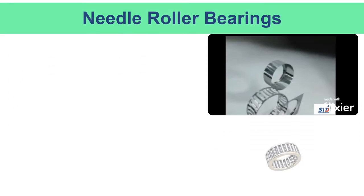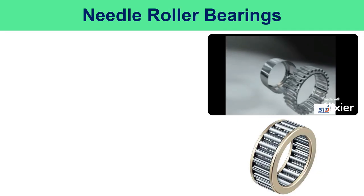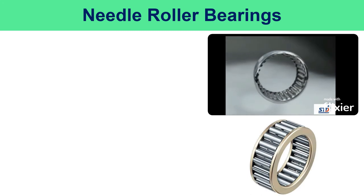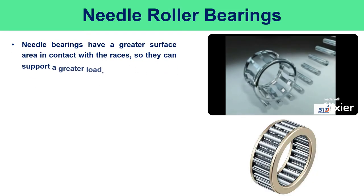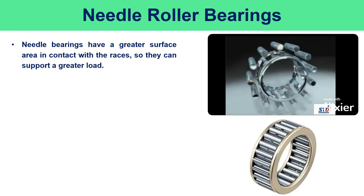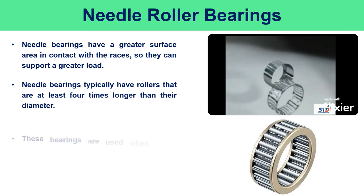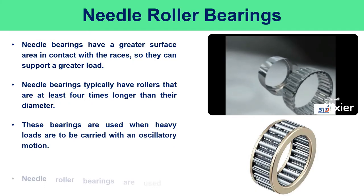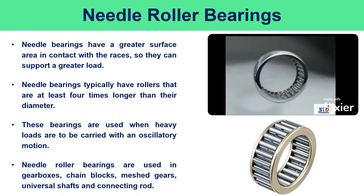A needle roller bearing is a special type of roller bearing that uses long, thin cylindrical rollers resembling needles. These bearings are relatively slender and fill the space so that neither a cage nor retainer is needed. Needle bearings have a greater surface area in contact with the races, allowing them to support greater loads. The rollers are typically at least four times longer than their diameter. These bearings are used when heavy loads are to be carried with an oscillatory motion, and are used in gearboxes, chain blocks, meshed gears, universal shafts, and connecting rods.